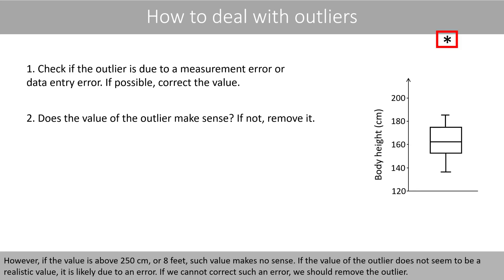However, if the value is about 250 cm or 8 feet, such value makes no sense. If the value of the outlier does not seem to be a realistic value, it is likely due to an error. If we cannot correct such an error, we should remove the outlier.